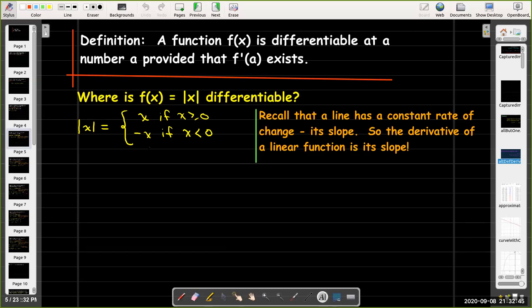Now, when we write it that way, it should be very clear that at every number except for zero, this absolute value function should be differentiable, because on each of these branches, we just have a straight line, y = x or y = -x. And a line has a constant rate of change. That's what we call its slope. And so the derivative of a linear function is just its slope. So for any value except for zero, it's clear that the absolute value of x is differentiable for all of those values.